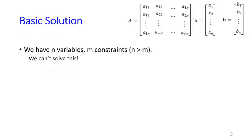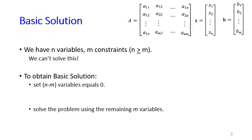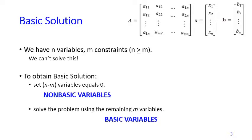The idea to obtain a basic solution is that we set n minus m variables equal to zero. If we have 99 variables and two constraints, we set 97 variables equal to zero — we ignore them entirely. That leaves only two remaining variables, and with two variables and two constraints we can solve the problem.